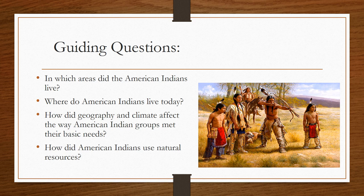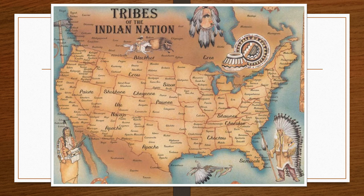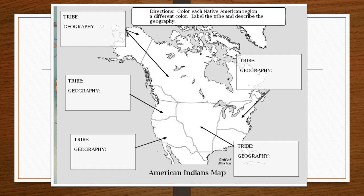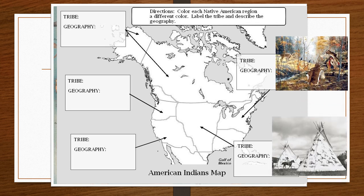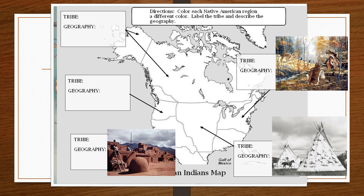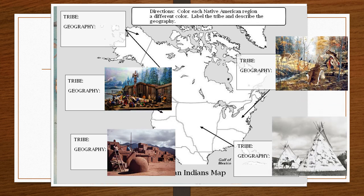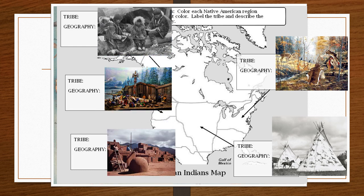And how did American Indians use natural resources? Before the Europeans came to North America there were hundreds if not thousands of Native American tribes. But for our unit this year we are going to be focusing on only five of those tribes: the Iroquois tribe, the Lakota Sioux tribe, the Pueblo tribe, the Kwakiutl tribe, and the Inuit tribe.